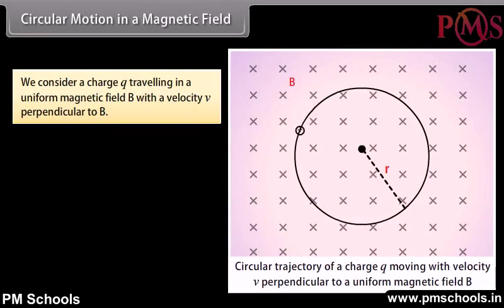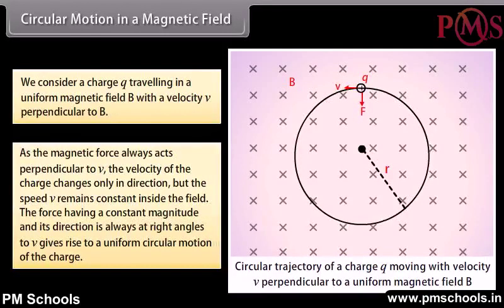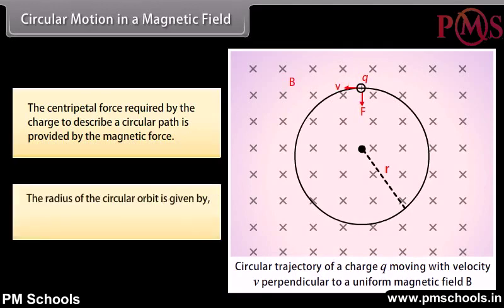Circular motion in a magnetic field: A charge Q travelling in a uniform magnetic field B with velocity V perpendicular to B experiences a magnetic force always perpendicular to V. The speed remains constant but direction changes continuously, resulting in uniform circular motion. The centripetal force for the circular path is provided by the magnetic force. The radius of the circular orbit is r = mV / QB.